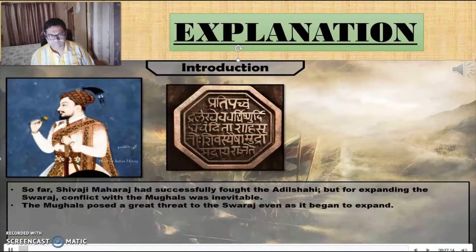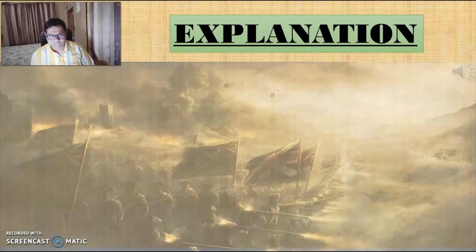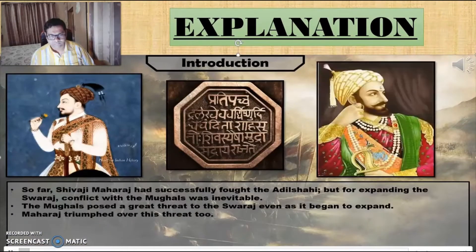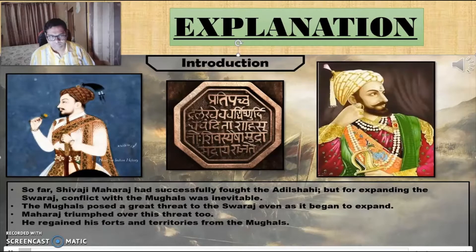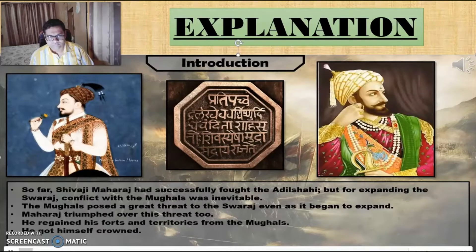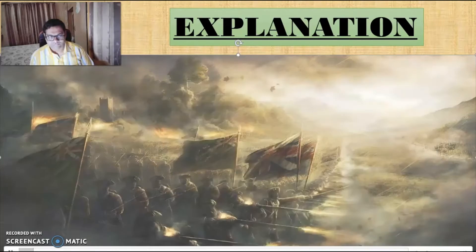The Mughals posed a great threat to the Swaraj. Even so, Shivaji Maharaj overcame this threat. He regained his troops and territories from the Mughals, got himself crowned, and took up a campaign of the south.